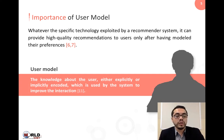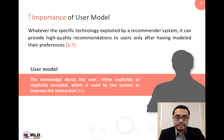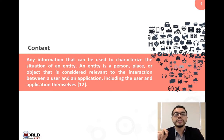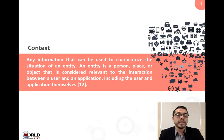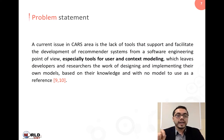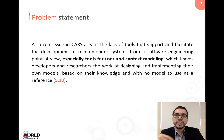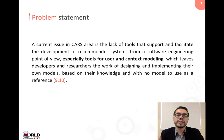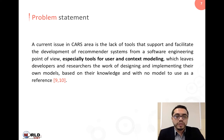A user model is defined as the knowledge about the user, either explicitly or implicitly encoded, which is used by the system to improve the interaction. Context is defined as any information that can be used to characterize the situation of an entity — a person, place, or object considered relevant to the interaction between the user and the application. A current issue in the CARS area is the lack of tools to support and facilitate the development of recommender systems from a software engineering point of view, especially tools for user and context modeling.